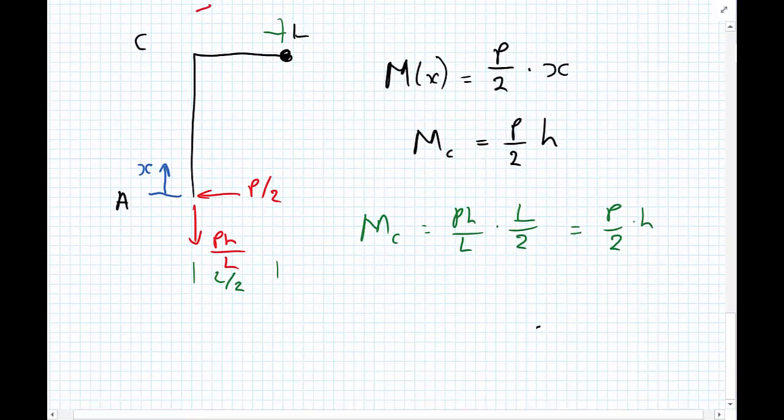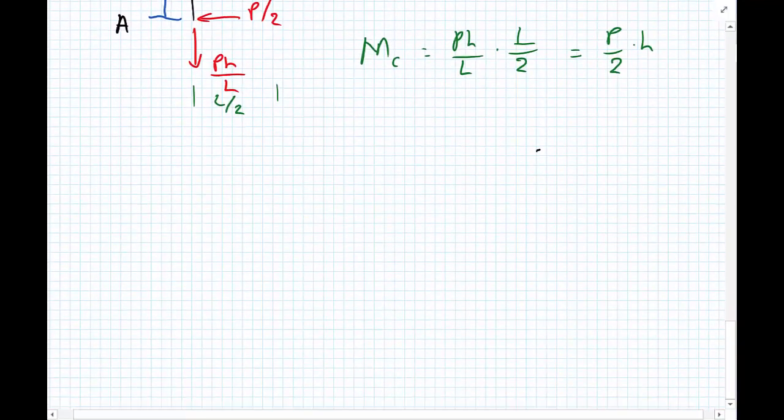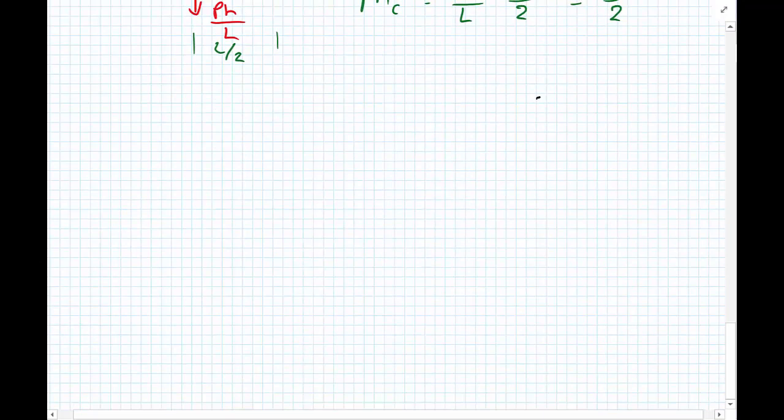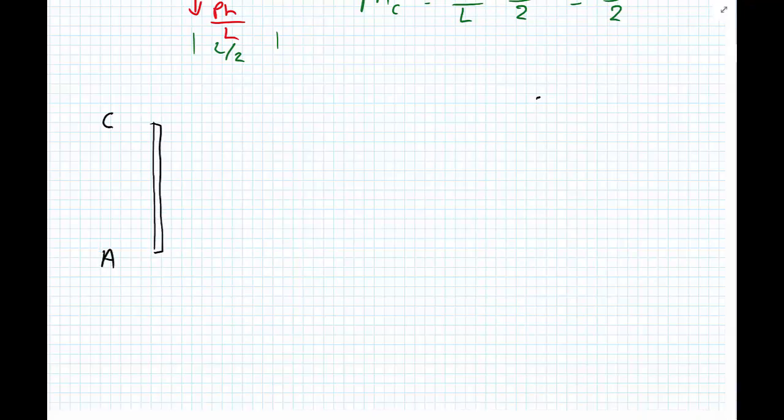So we can use that information now to draw our bending moment diagram. So for AC, we have A and C, and I'm going to draw the bending moment diagram on the tension side. So remind ourselves the whole structure was bending to the right and we had this kind of shape.